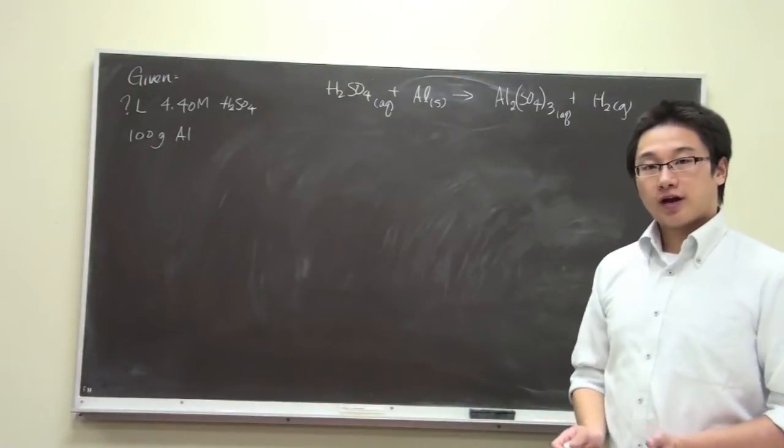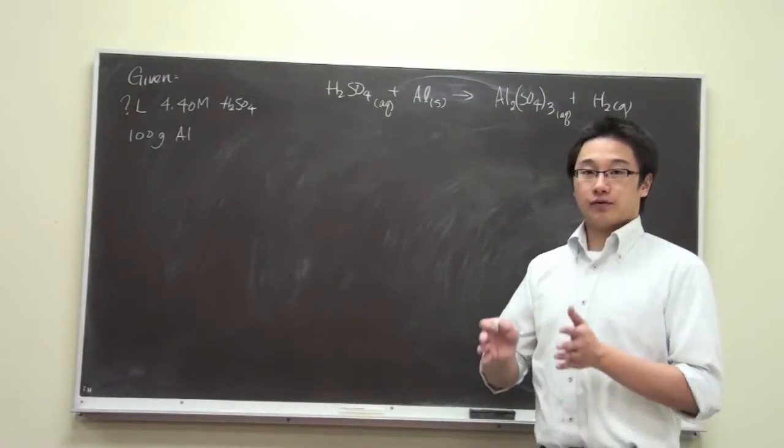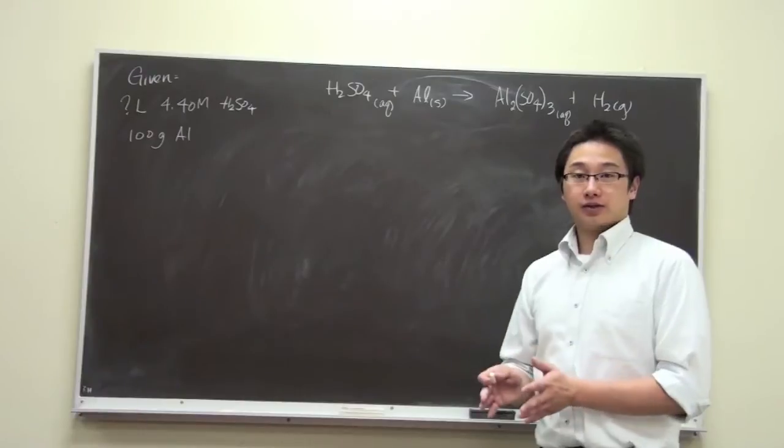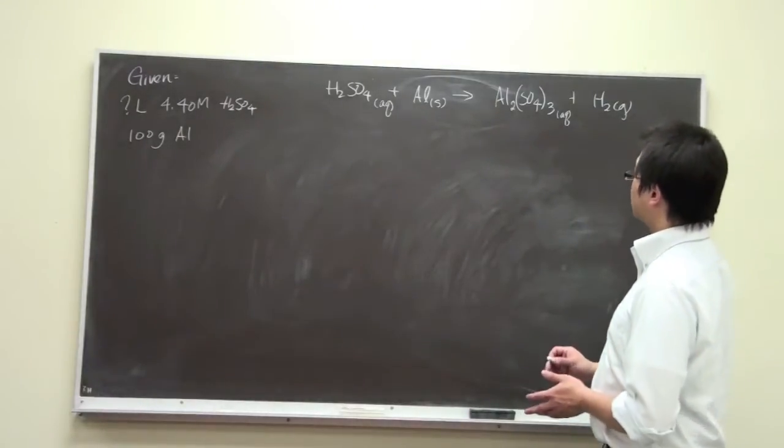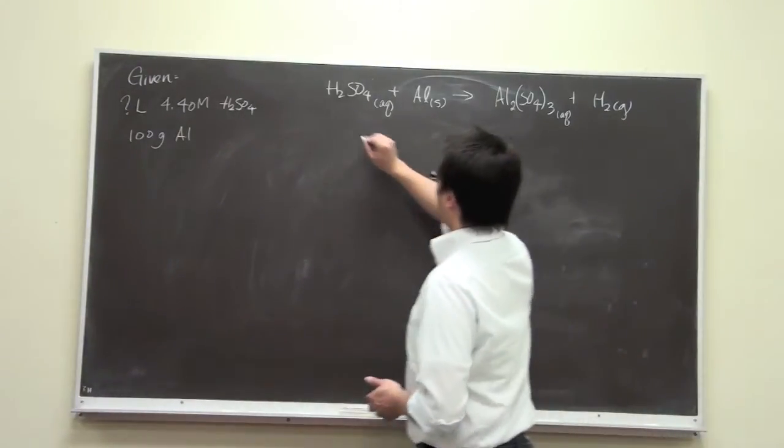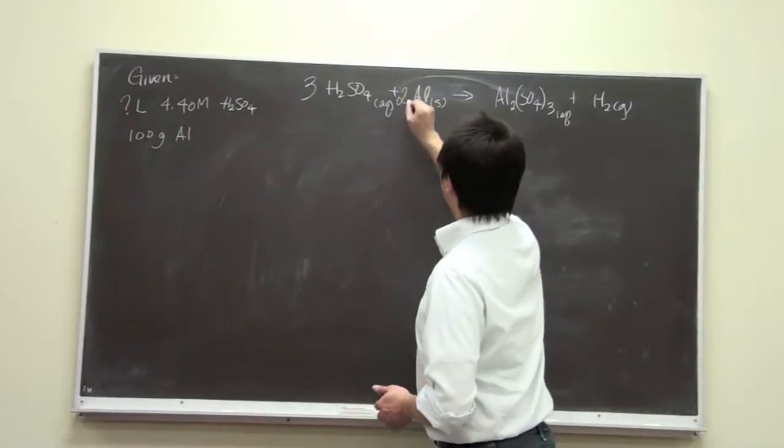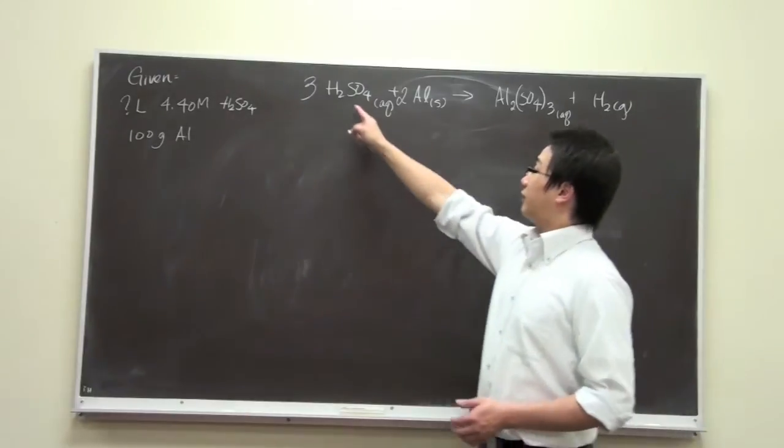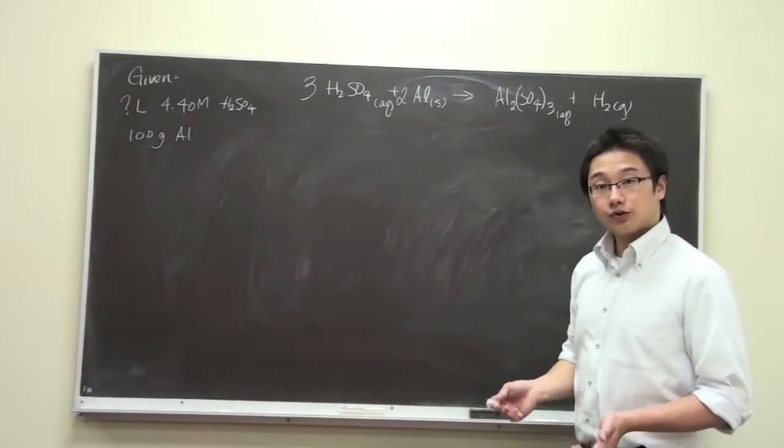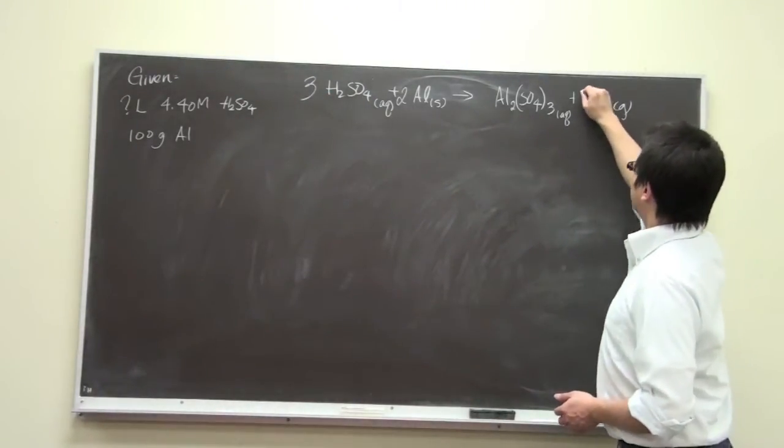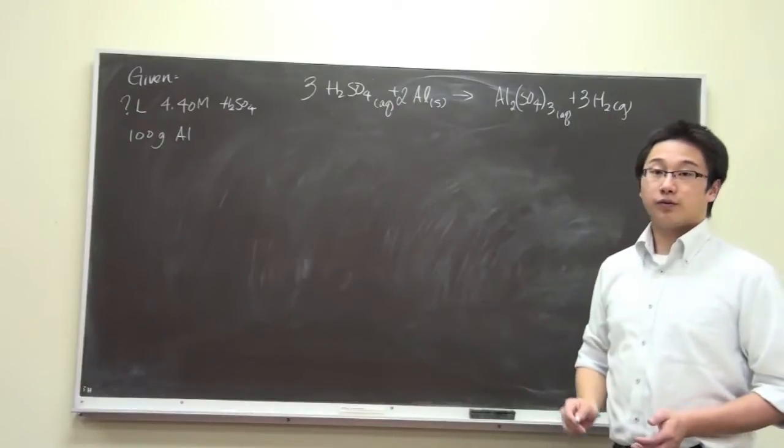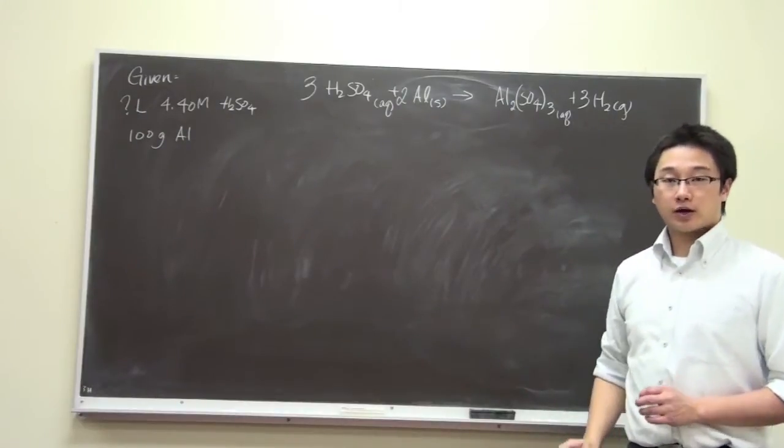Remember, when we deal with stoichiometry problems, we have to have a balanced equation. So let's balance this equation first. We have three sulfates here and two aluminum. On the left-hand side, we have six hydrogens total, and then we should have six hydrogens on the product side. Now the reaction is balanced.